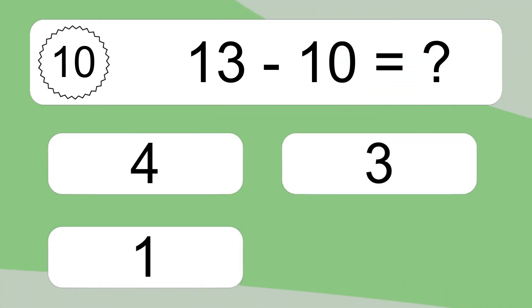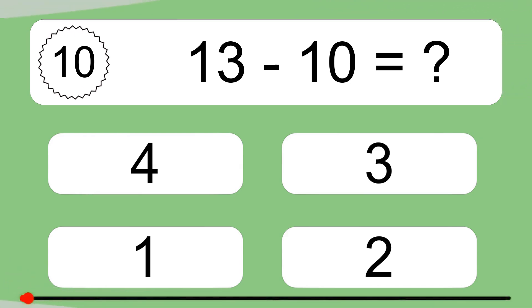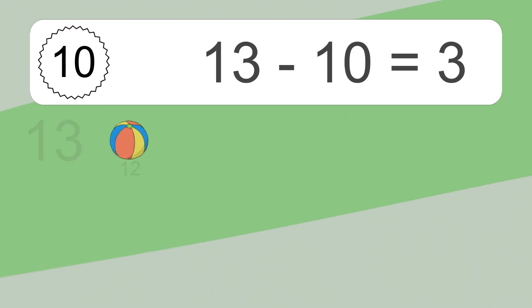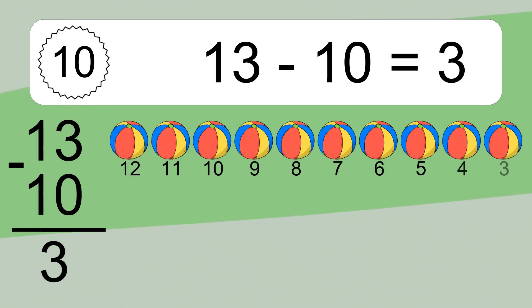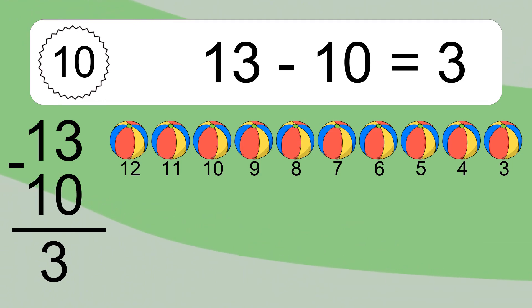13 minus 10 equals what? 13 minus 10 equals 3. Let's count it: 12, 11, 10, 9, 8, 7, 6, 5, 4, 3.